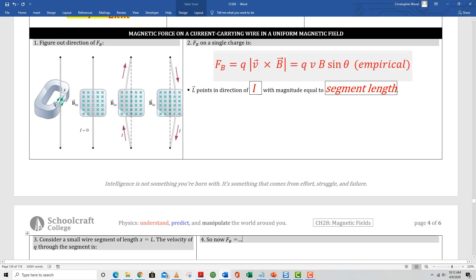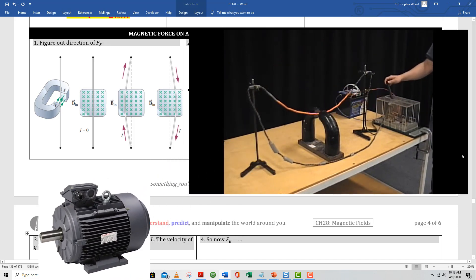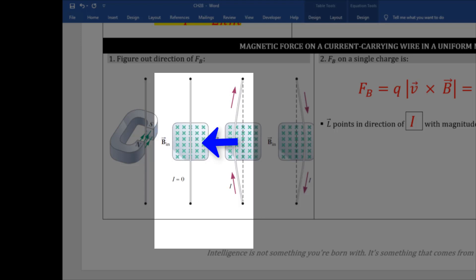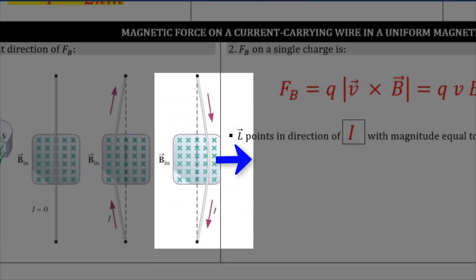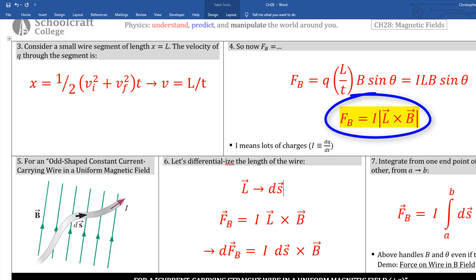Magnetic force on a current-carrying wire in a uniform magnetic field: we can harness magnetic forces to do useful work, starting with a wire being moved by a magnetic force — our first step into understanding how motors work. Using the right-hand rule: point your fingers into the page (direction of magnetic field), thumb upward (direction of current flow), and your palm points to the left, which is why the wire bows to the left. When current flows downward, the palm faces right, so the wire bows to the right. Box 3 uses kinematics to get an expression for velocity, and box 4 updates the force equation: F_B = QV × B.